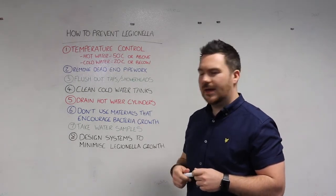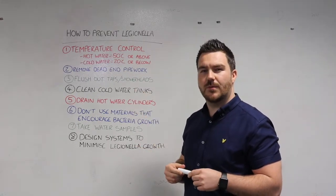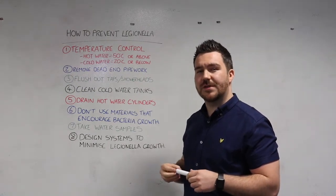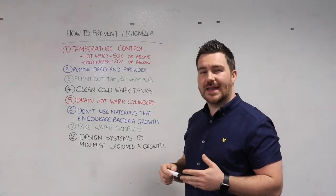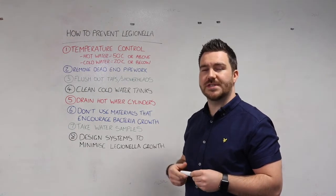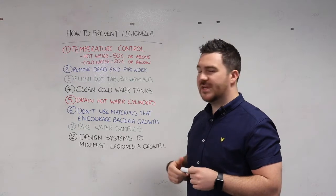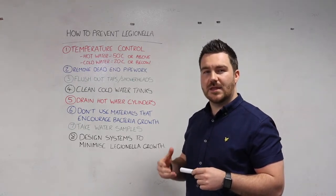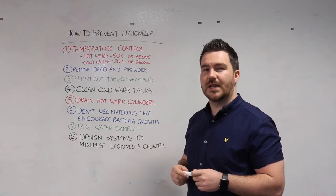When maintaining and managing your system, you've also got to look at how your system is designed. Removing any dead ends or dead legs, which are parts of the piping system that will hold water that could potentially become stagnant, is important. Through the risk assessment of Legionella, which might be done by a third party, they may indicate that you've got some dead piping that you need to remove to make sure there's no standing water.